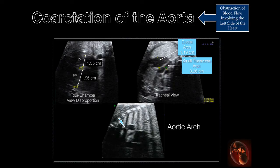This illustrates three views useful in the prenatal diagnosis of coarctation of the aorta. The four-chamber view demonstrates right to left disproportion. B-mode measurements show the right ventricle to be 1.95 centimeters and the left ventricle 1.35 centimeters. The tracheal view demonstrates the ductus arteriosus to be dilated, measuring 1.1 centimeters.